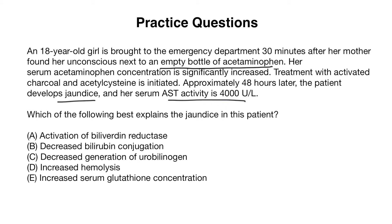In this question we're dealing with a Tylenol overdose or an acetaminophen overdose. If we think about whether this is pre-hepatic, intra-hepatic, or post-hepatic, this is going to be an intra-hepatic cause of jaundice because we have liver damage from the Tylenol. The correct answer choice here is actually B, decreased bilirubin conjugation. But let's go through the different answer choices and see why.